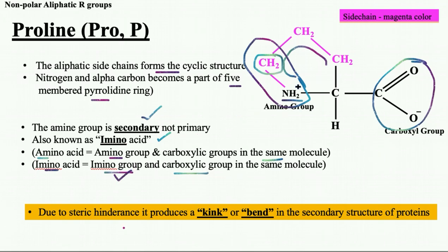In terms of protein structure, wherever proline is present, due to steric hindrance from its cyclic structure, it produces a kink or a bend in the secondary structure of proteins. That region is therefore quite rigid — in contrast to glycine, where the region is quite flexible.